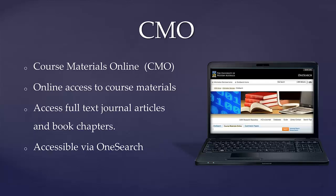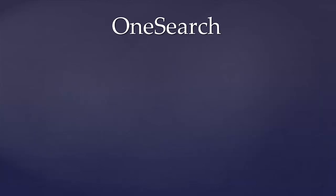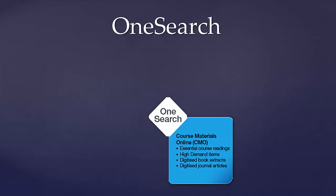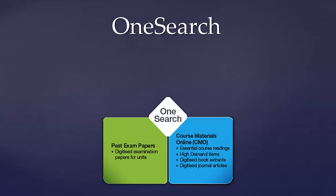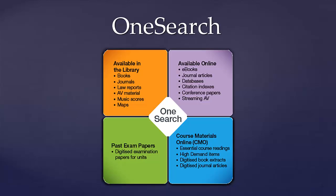CMO is accessed via OneSearch, which can be found on the library homepage. OneSearch is an online system that enables you to find and access a large range of information resources, as well as your essential course readings from CMO. OneSearch can also be used to access past exam papers, books, journals and AV materials, as well as an extensive collection of online resources, including e-books, journal articles and conference papers.